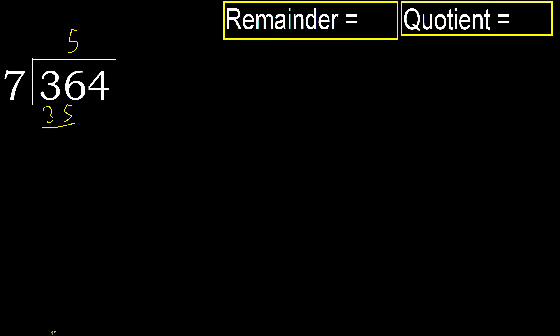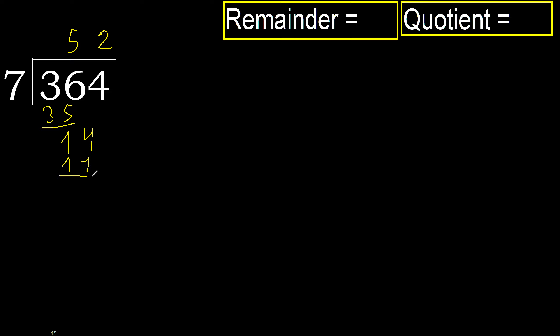Subtract: 36 minus 35 is 1. Next, bring down to get 14. 7 multiplied by 2 is 14 — 14 is not greater.